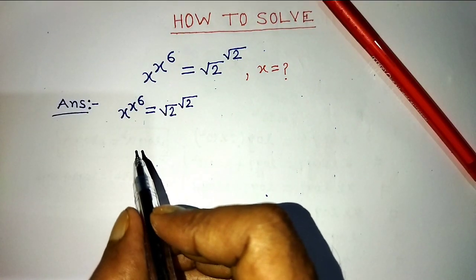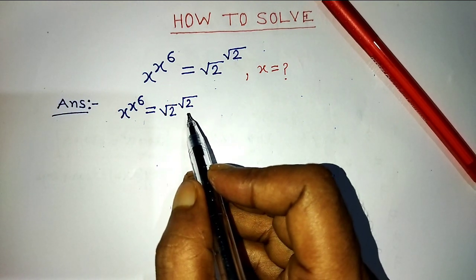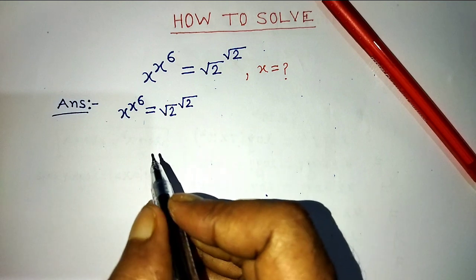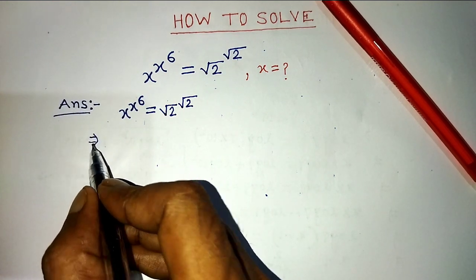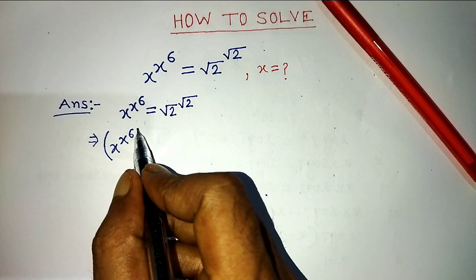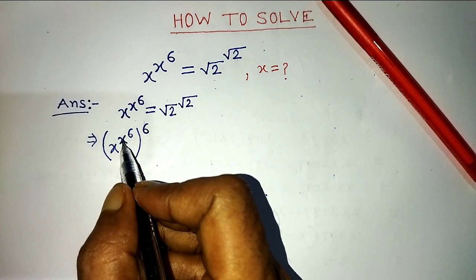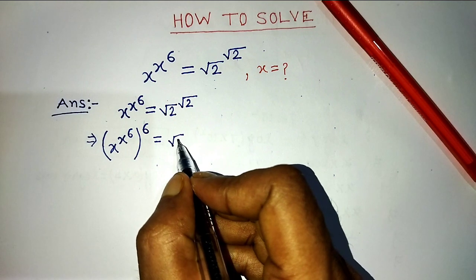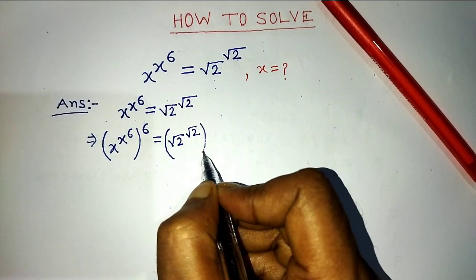Our exponential equation is x raised to the power x to the power 6, is equal to root over of 2, whole to the power root over of 2. To find the value of x, we have to take power 6 on both sides. On the left hand side, we write x raised to the power x to the power 6, whole to the power 6, is equal to on the right hand side, root 2 whole to the power root 2, and we take power 6.